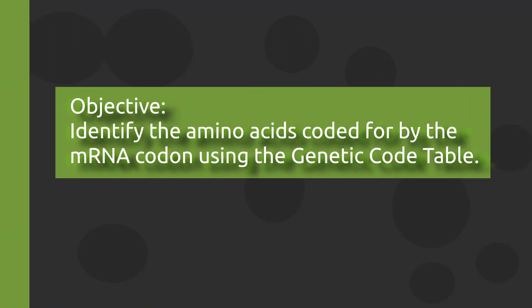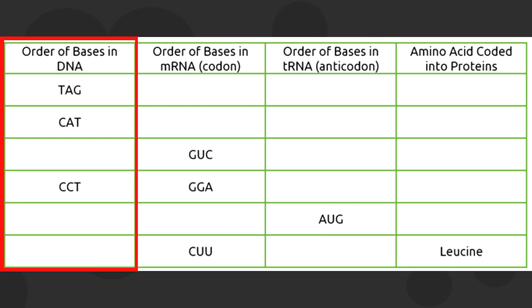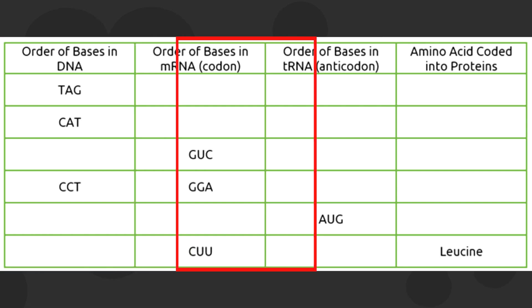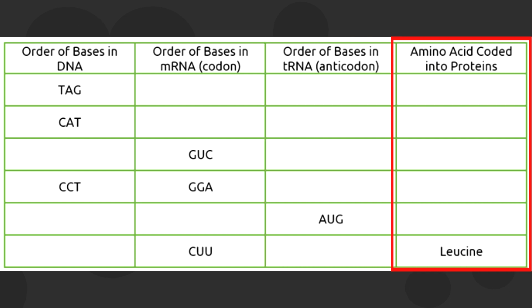Hello everyone! Today we will discuss how to identify the amino acids coded for by the mRNA codon using the genetic code table. We are going to fill in the table with the necessary answers such as the order of bases in DNA, the mRNA, the tRNA, and the amino acid produced or coded into proteins.